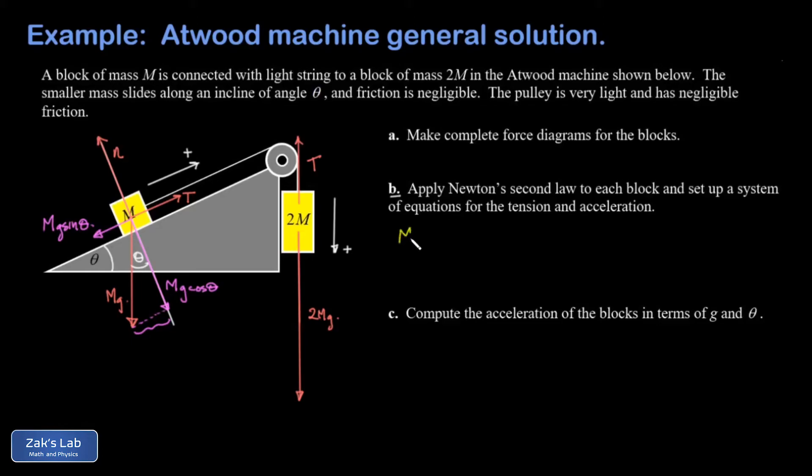And if I look at M, I have T pointing in the positive direction, and then I have a minus Mg sine theta. That's the force that points in the negative direction for that coordinate system. And that's equal to the mass I'm looking at, which is M, times the acceleration A. Then I look at 2M. That has a force of 2Mg pointing in the positive direction, which is down for the analysis of that mass, minus a force of T. That was my upward force, which is negative for that coordinate system, is equal to MA. Well, the mass is 2M, and my acceleration is A. That's the system of two equations and two unknowns, where the unknowns are the tension in the string and the acceleration of these masses.